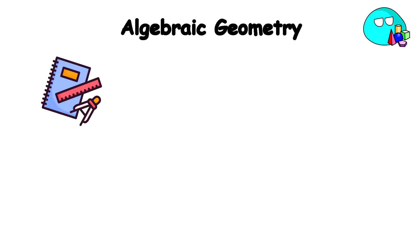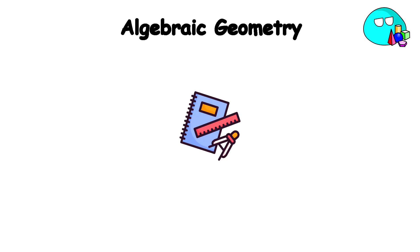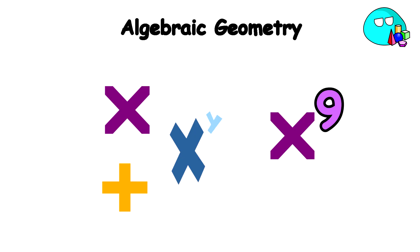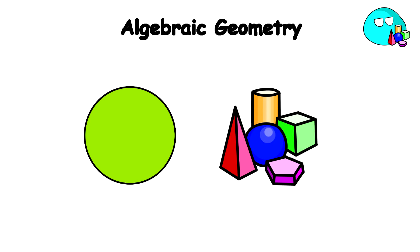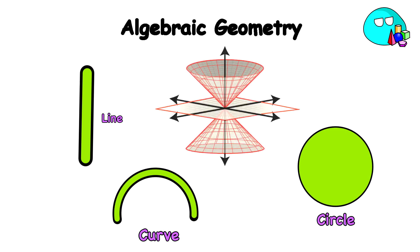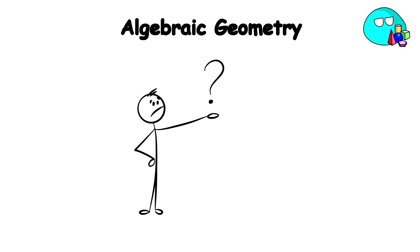Algebraic Geometry. Algebraic Geometry studies the connection between algebraic equations—these are equations involving variables and their various operations like addition, multiplication, and exponentiation, multiplying by a larger number. Think of equations like x to the second power plus y to the second power equals one, representing a circle and geometric shapes. These are objects like lines, circles, curves, and surfaces that we visualize in space. Algebraic Geometry asks questions about these shapes.